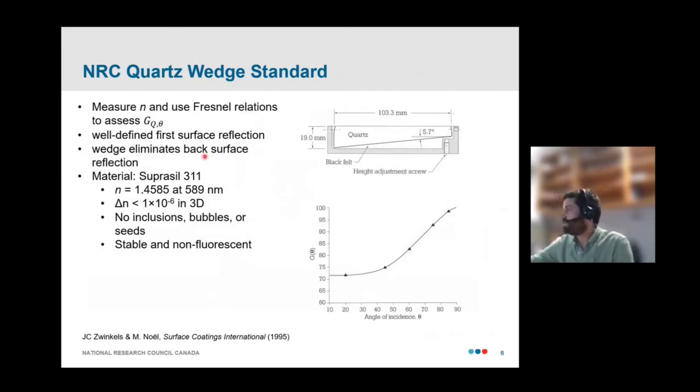So, our quartz wedge standard. I'm just going to really briefly describe these. We've already heard about how this is done. But the basic idea is you have a nice optical material whose refractive index you know, and you can use the Fresnel relations to compute the specular gloss at different angles. We use a wedge geometry to remove this first surface reflection. And as an optical material, we're using a Suprasil 311 glass. And this has a number of nice properties as a reference material. The variations in the refractive index are thought to be at the PPM level. It has very few inclusions or other defects in the bulk of the glass that might lead to some unwanted scattering. And our experience has also been that it's highly stable and non-fluorescent, making it a nice material to use for this purpose.